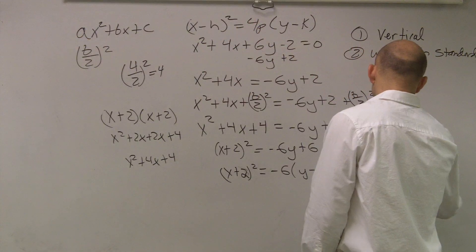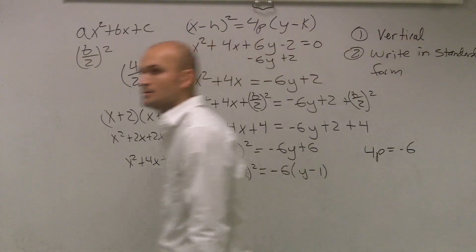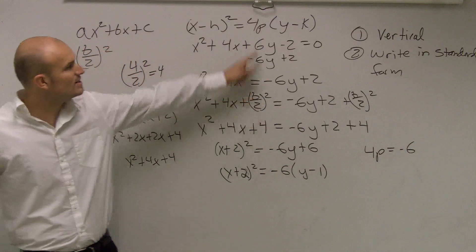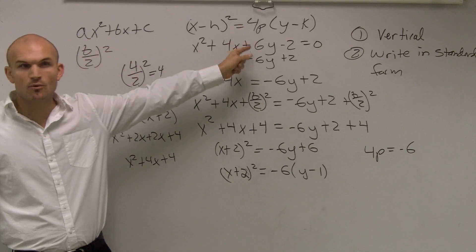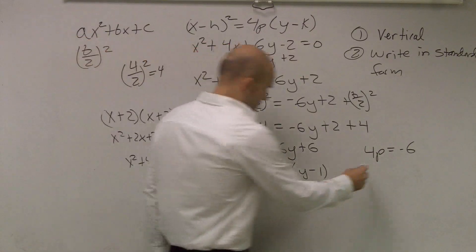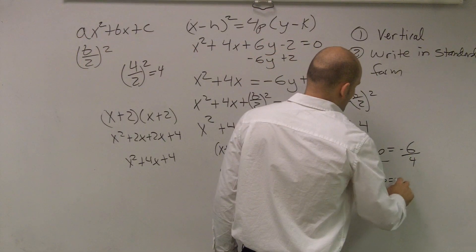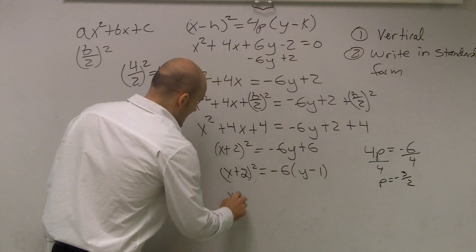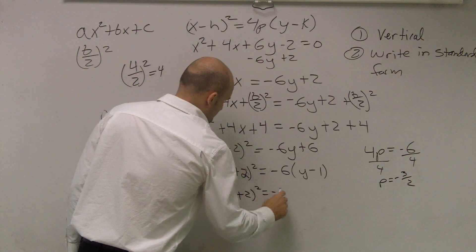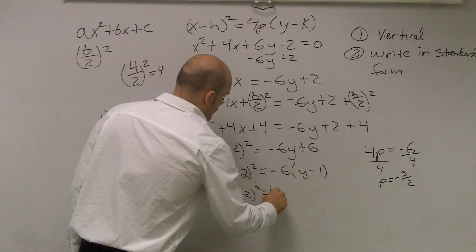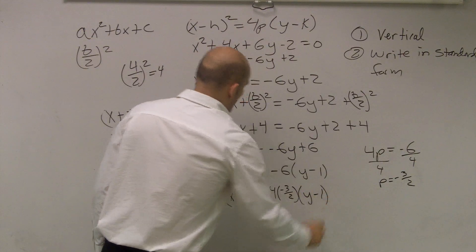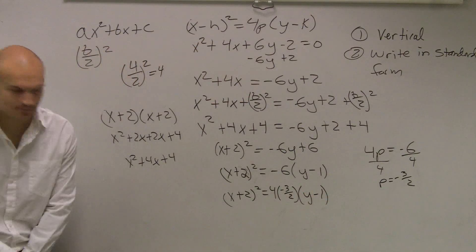So now I need to figure out, I can say 4p equals negative 6. It's almost in that form. We got x plus 2 squared equals negative 6 times y minus 1, but we don't have that multiplied by 4 to figure out what our p value is. So I say 4p equals negative 6. So you divide it by 4. p equals negative 3 divided by 2. So now I can write 4 times negative 3 divided by 2 times y minus 1.